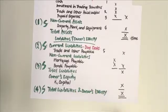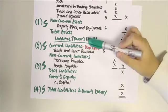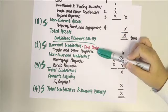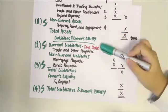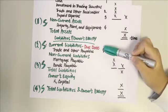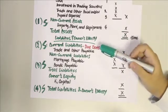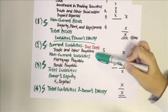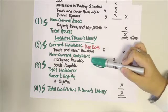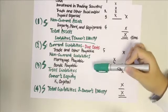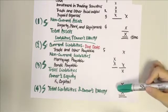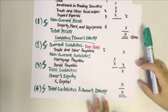Next, we move on to liabilities and owner's equity. First, list your current liabilities, which usually include trade and other payables — current liabilities are arranged according to due date. Then come non-current liabilities, which may include mortgage payable and bonds payable. Finally, add owner's equity (capital) to get your total liabilities and owner's equity.